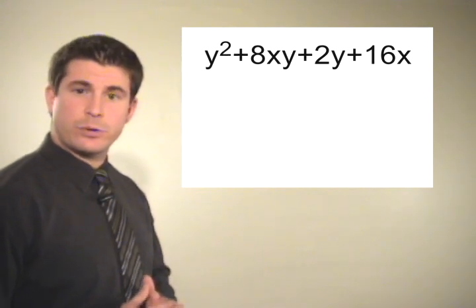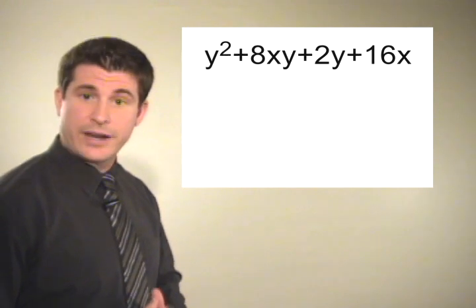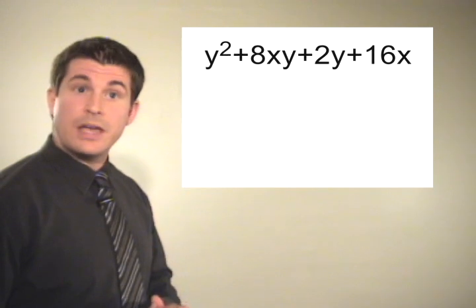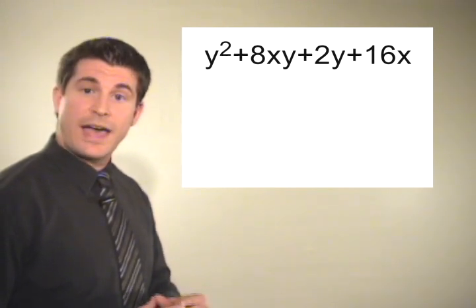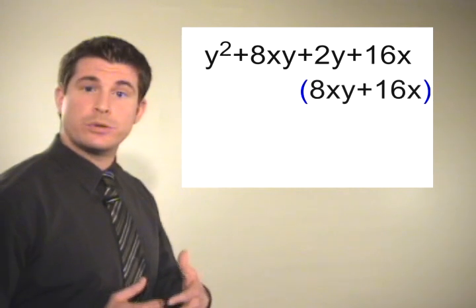Now, when you're factoring by grouping, the first thing that you want to do is to group terms with common factors. So take a look at the second term and the fourth term, and you should notice that they both have an x in common. So we're going to group those two terms together.